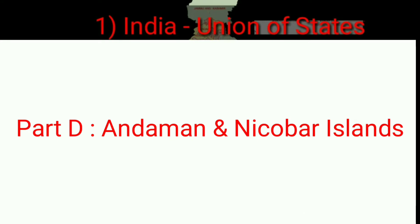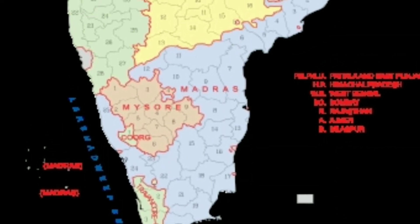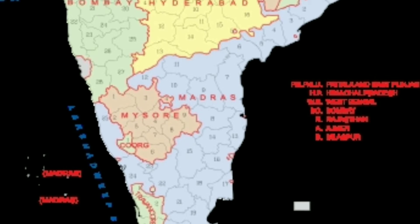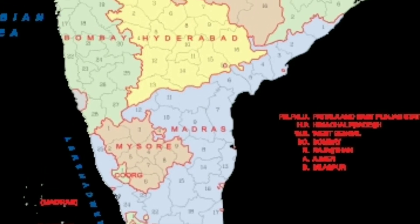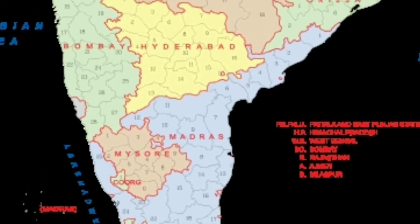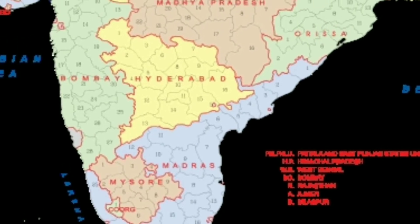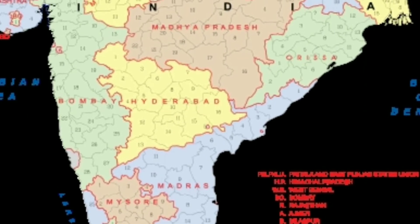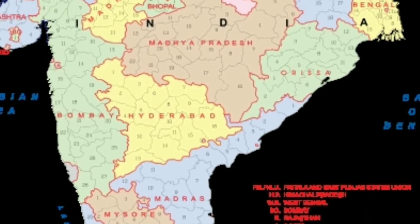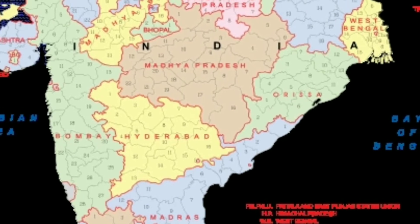Let's find these states on the map. There is no Kerala — Travancore-Cochin was there. Malabar was included in Madras. There is Mysore and Coorg. There is no Goa; it's included in Bombay, Hyderabad, and Madhya Pradesh. Orissa is now Odisha.